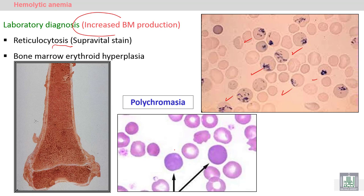By ordinary stain or Romanowsky stain, we can also see polychromasia — large cells that are dark or polychromatic, having two colors: red and blue, with no central pallor. This is reticulocytosis identified by Romanowsky stains as polychromatic cells or polychromasia.